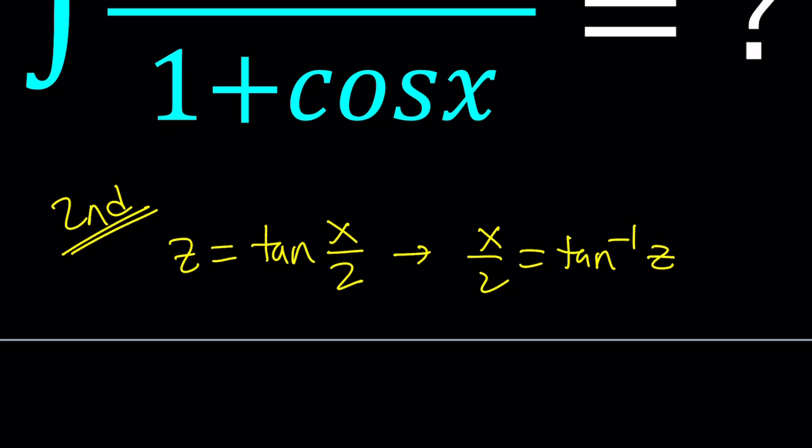And then we're going to multiply both sides by 2 and x becomes 2 times tan inverse of z. You could put z in parentheses and x over 2 as well if you want. Some people get confused.